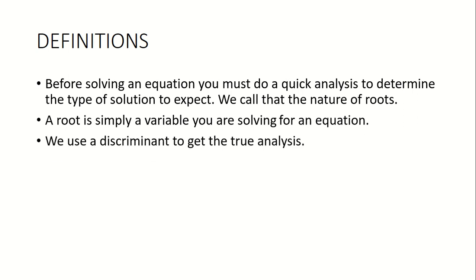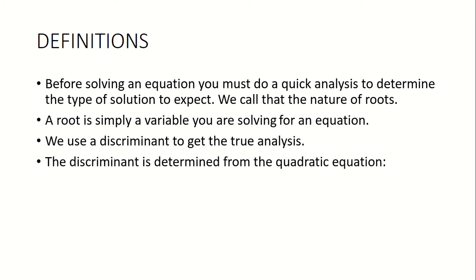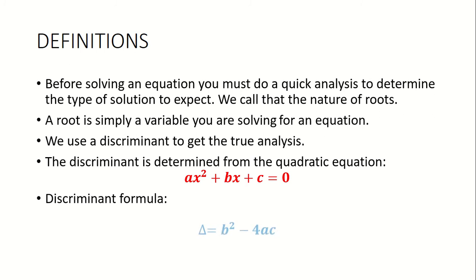We use a discriminant to get the true analysis. A discriminant is determined from the quadratic equation. In the quadratic formula, underneath the square root you will have b squared minus 4ac. That b squared minus 4ac is what we call the discriminant, and it helps us determine what type of solution we are going to have when we solve a given equation.